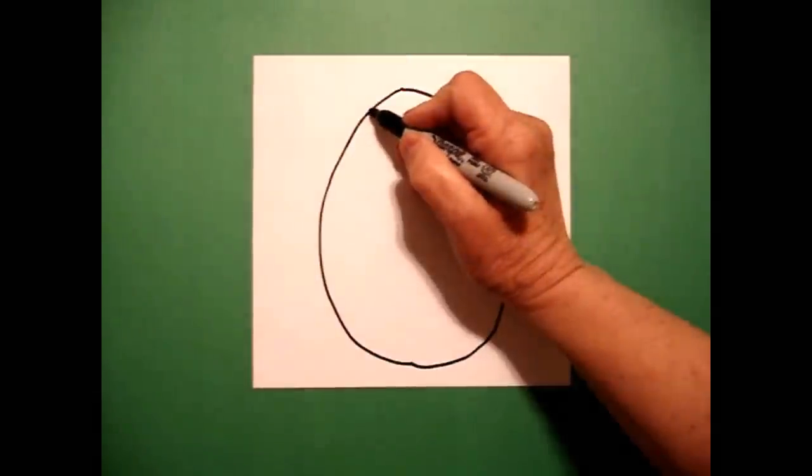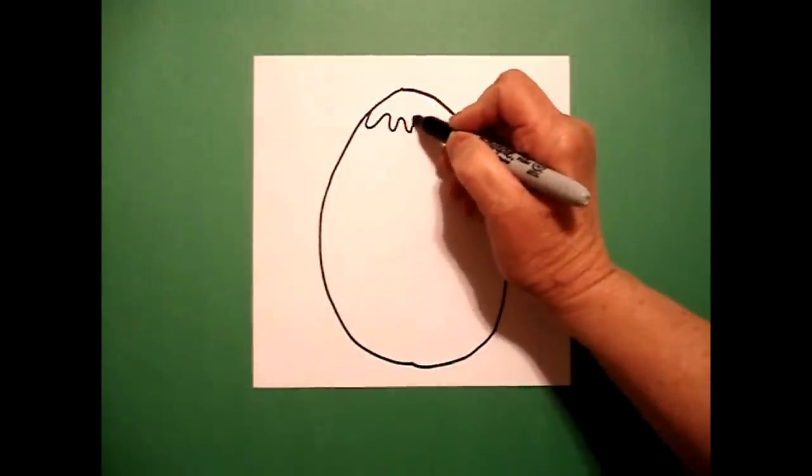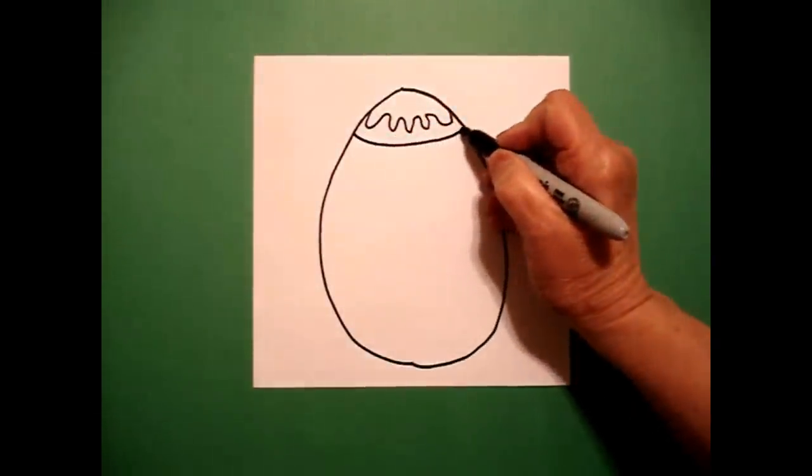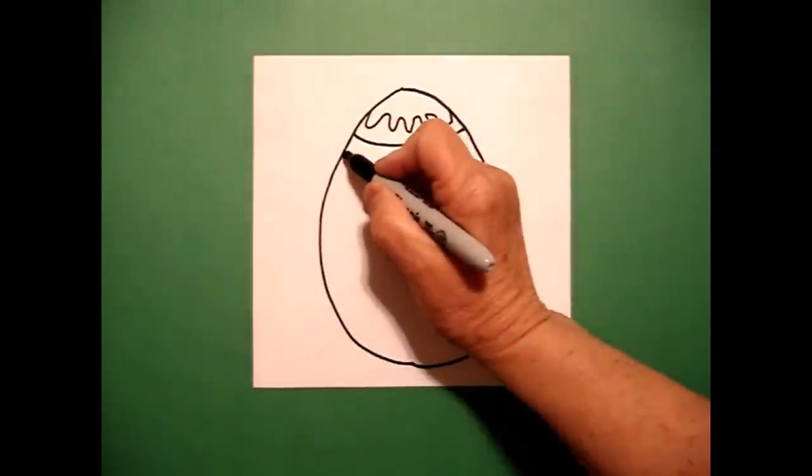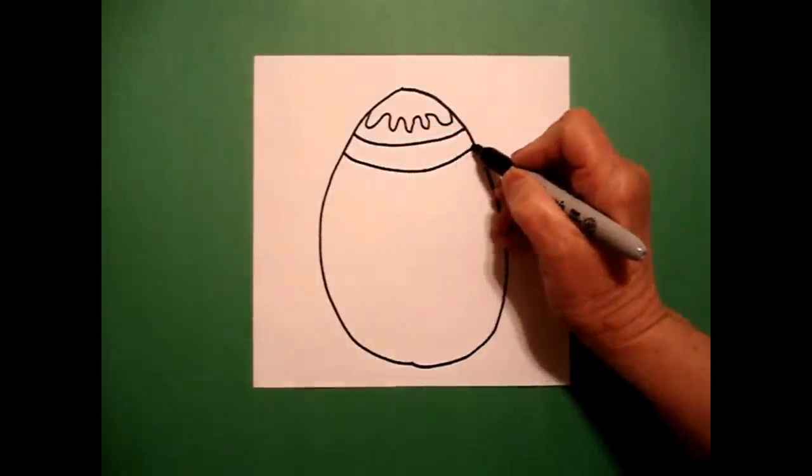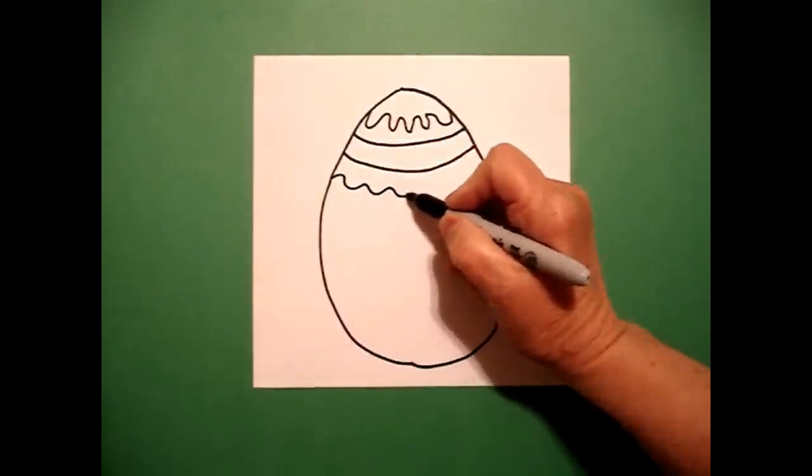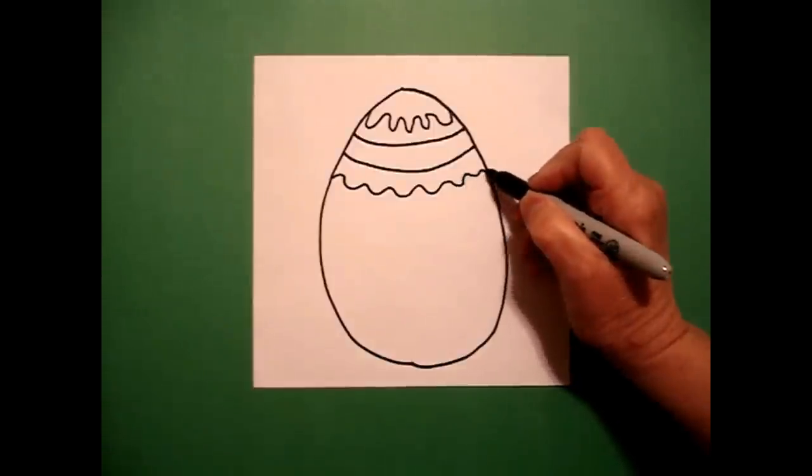I come up to the very top and draw a wavy, wavy, wavy line, connect. Then I draw a big curved line over, another big curved line over, and another wavy, wavy, wavy line, connect.